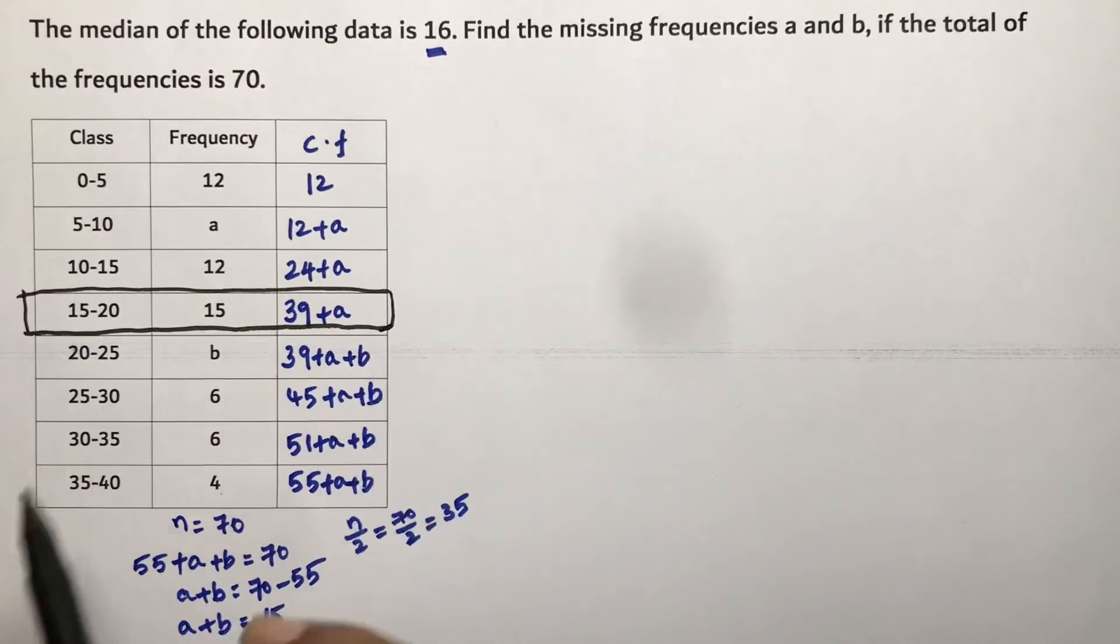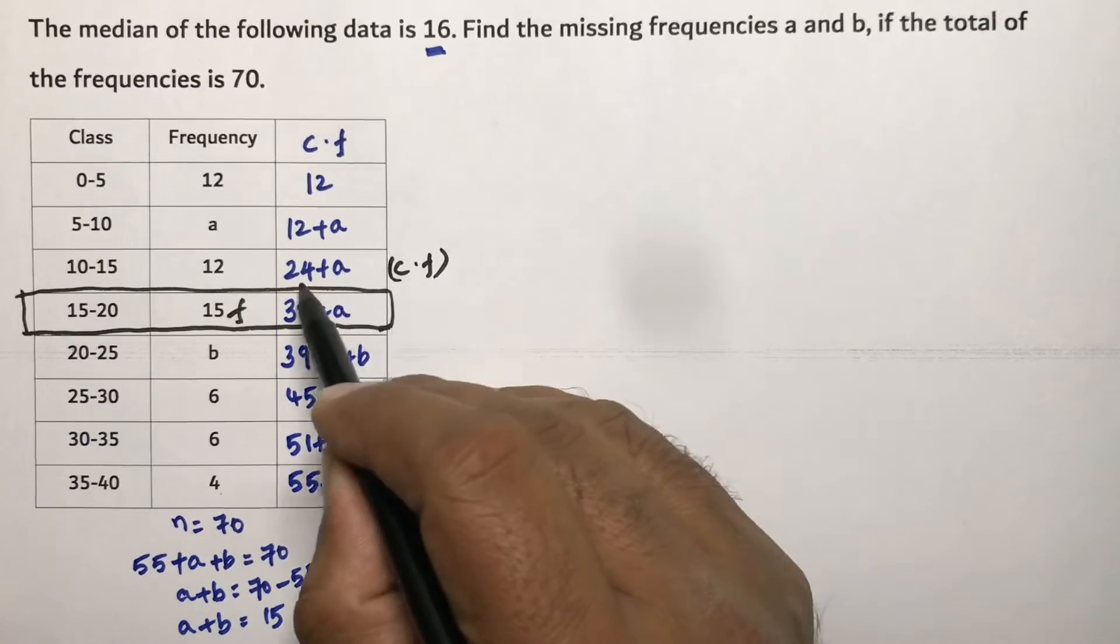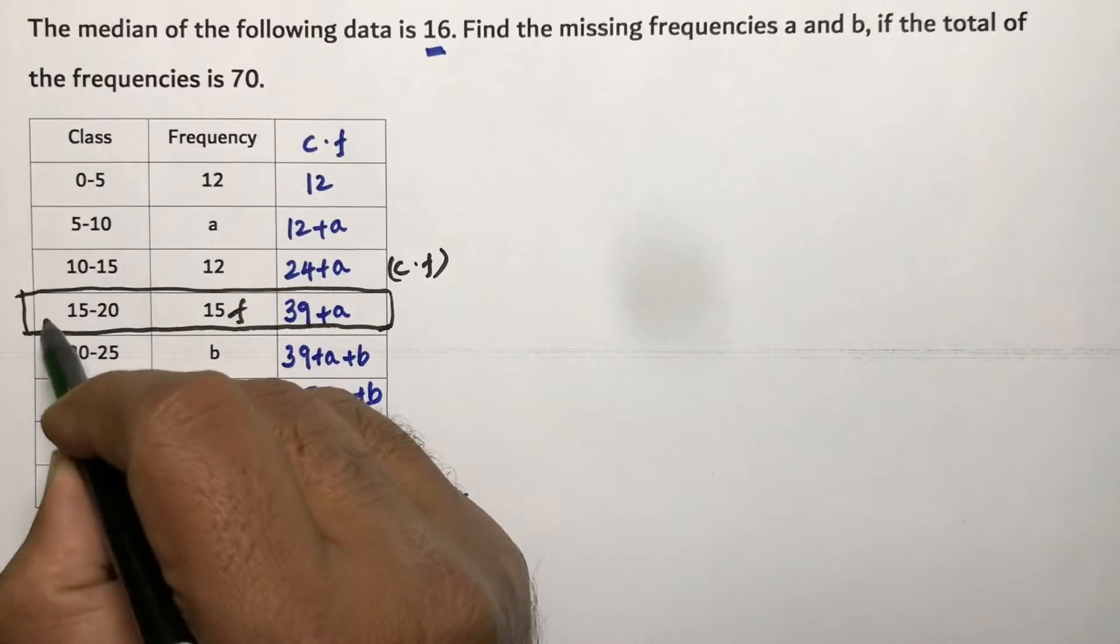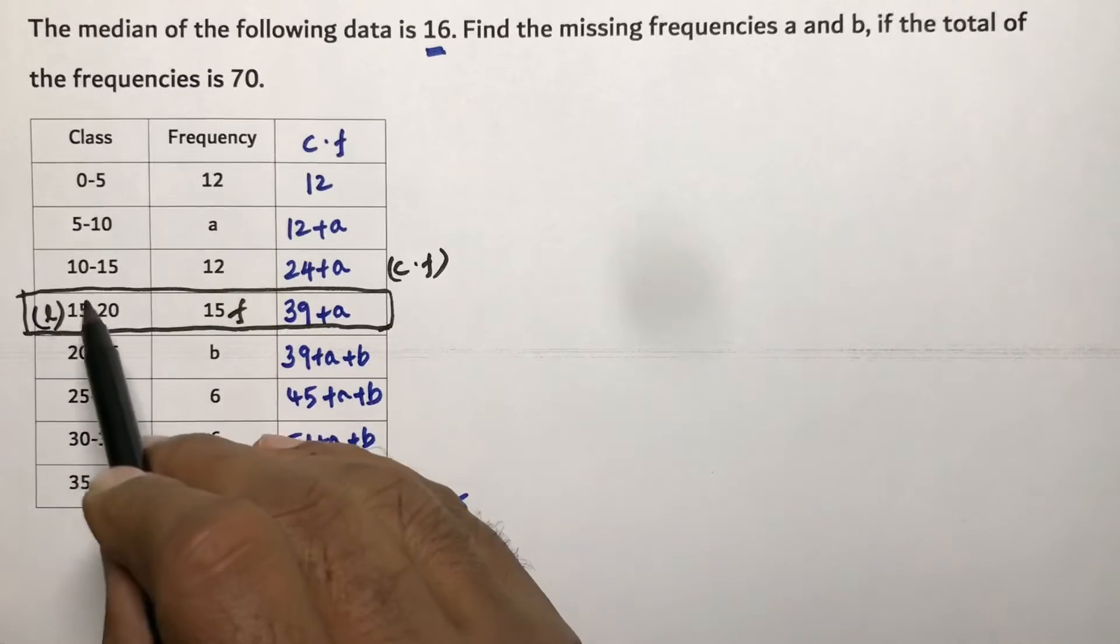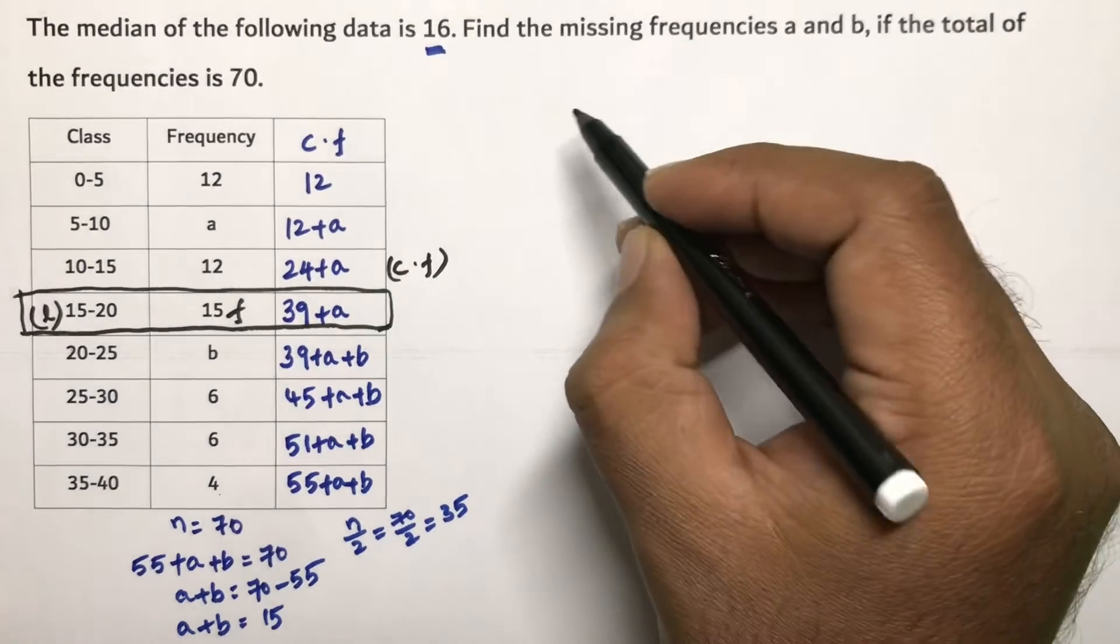So this is the frequency of the median class. Cumulative frequency preceding the median class is 24 plus a, and lower boundary is 15 because it is continuous class. Now if you write the formula, formula for median is M equals L plus N by 2 minus CF.